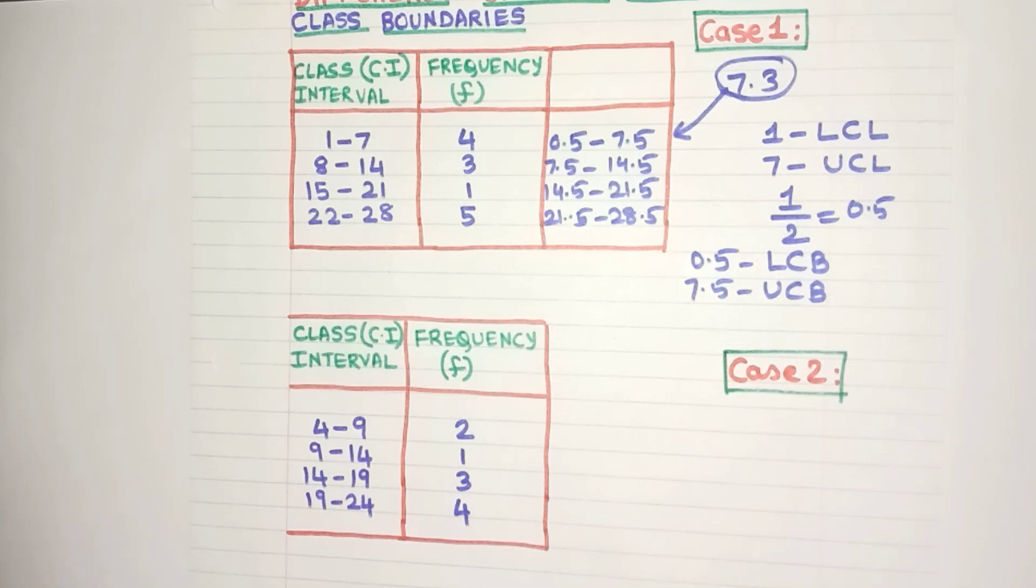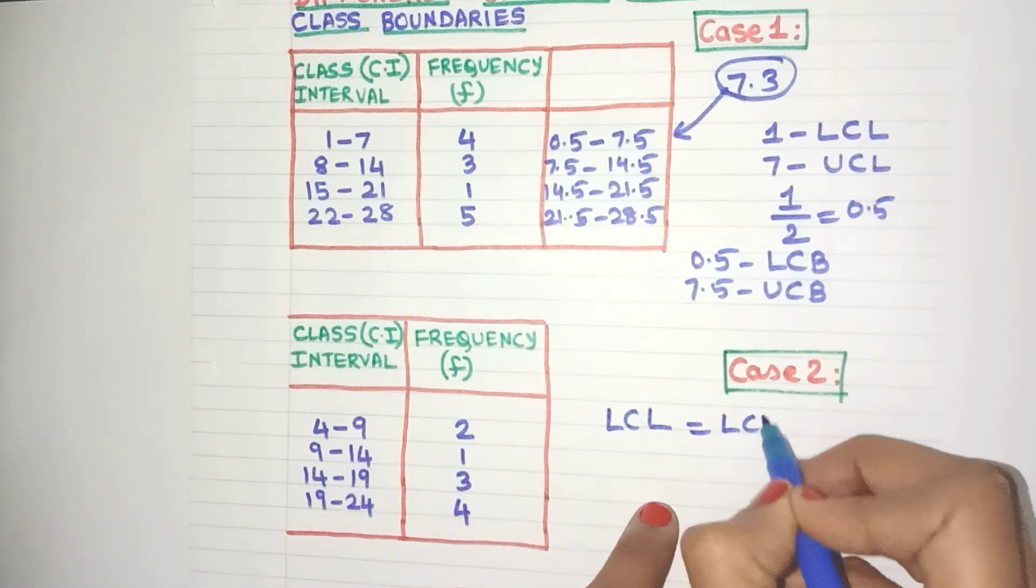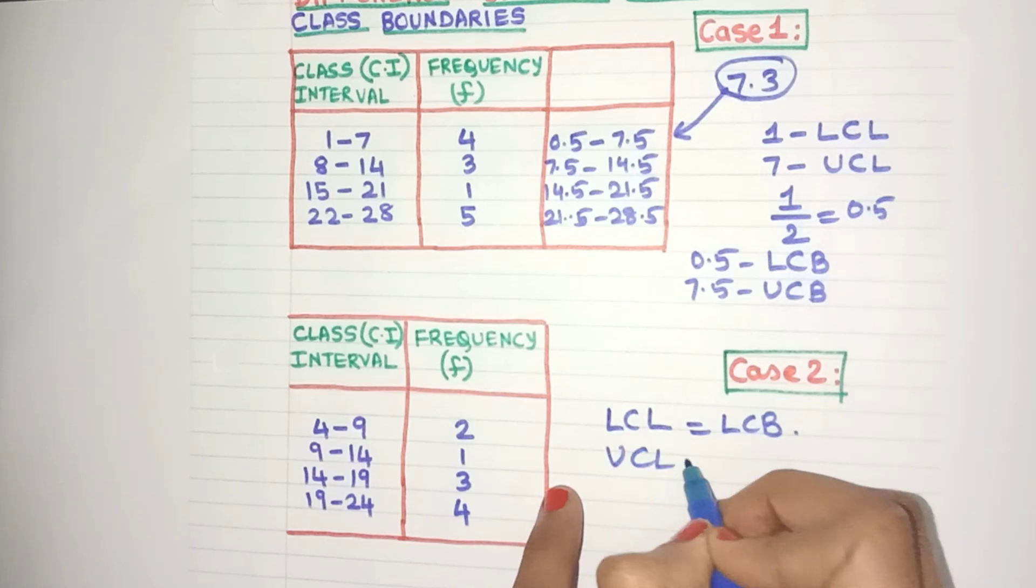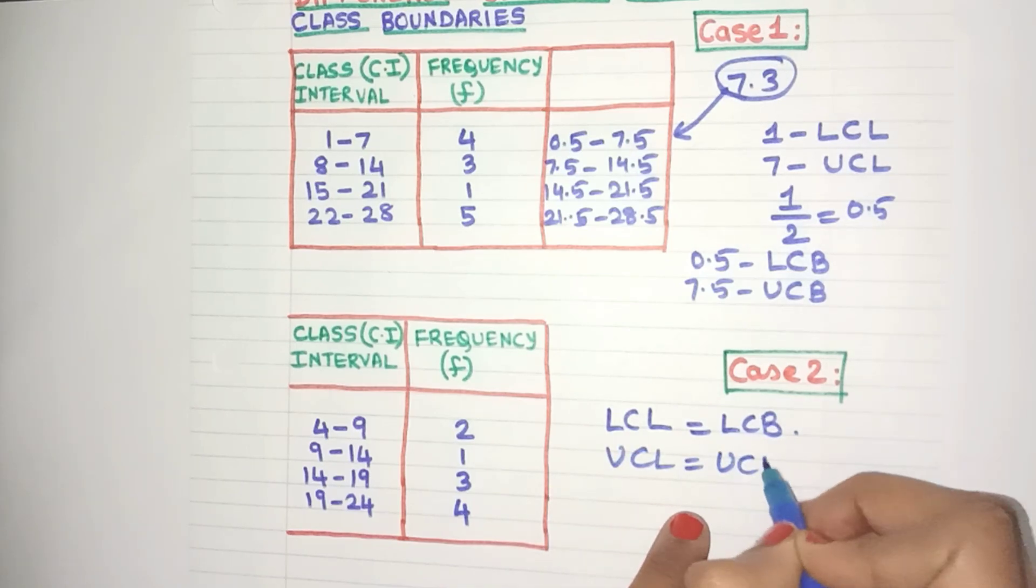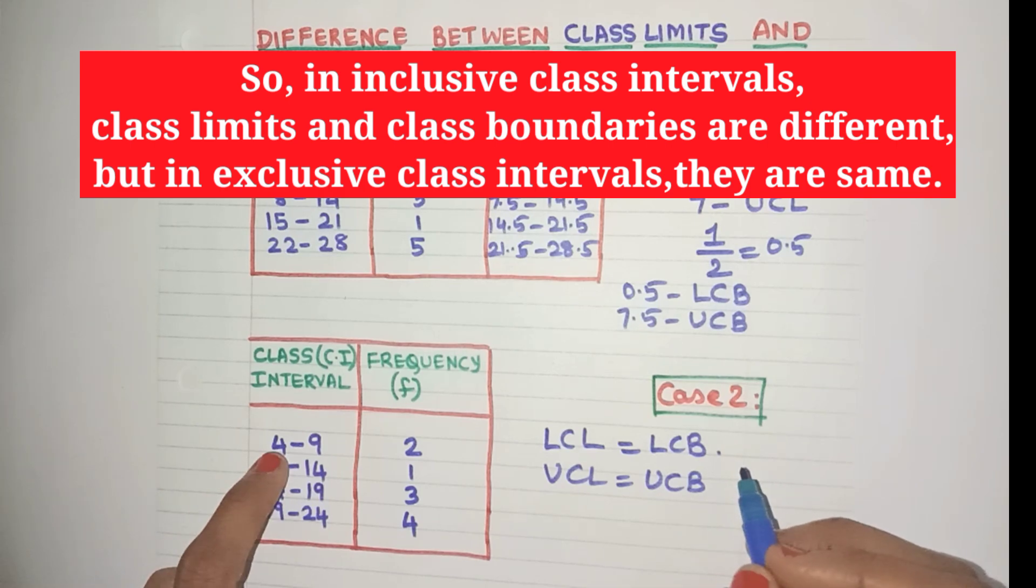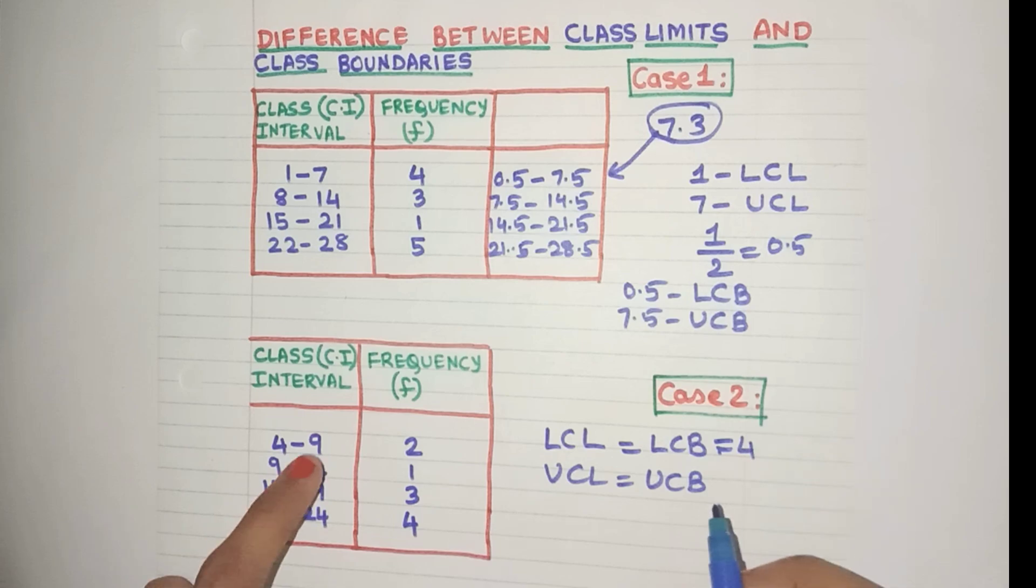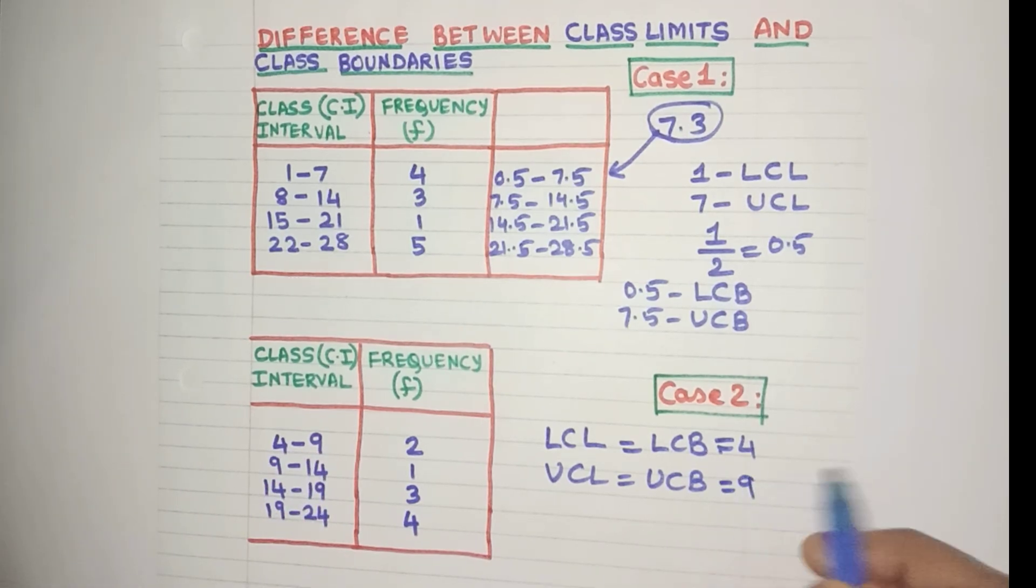So that means these are exclusive class intervals and the class limits and the class boundaries here are going to be one and the same. So the lower class limit here will be equal to the lower class boundary. The upper class limit will be equal to the upper class boundary. These are exclusive class intervals. The values are going to be one and the same. So if we take this class interval 4 to 9, what will be the lower class limit? Yes, it will be 4 and that will also be the lower class boundary. Similarly, 9 will be the upper class limit as well as the upper class boundary.